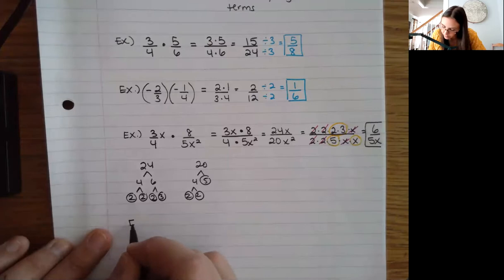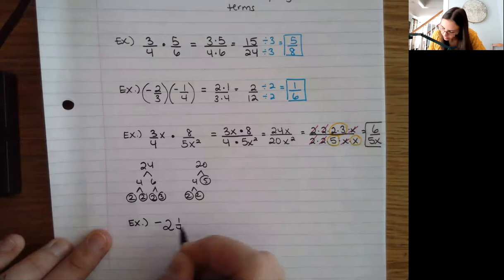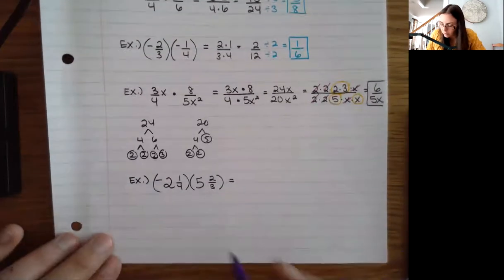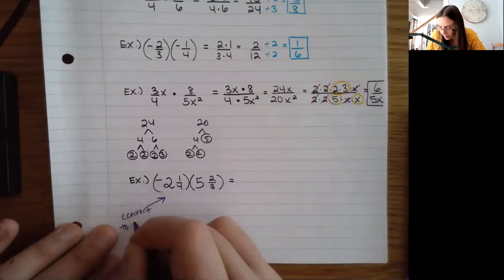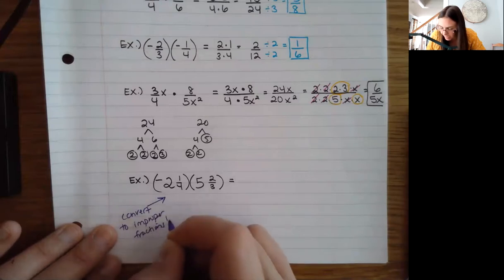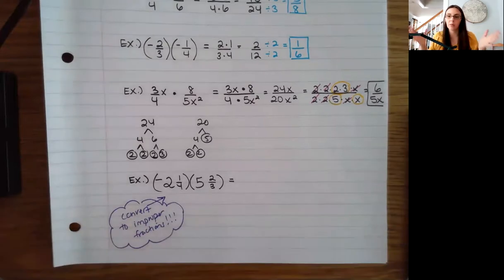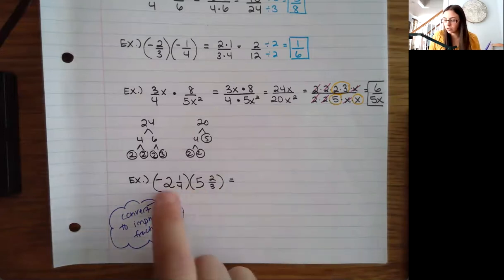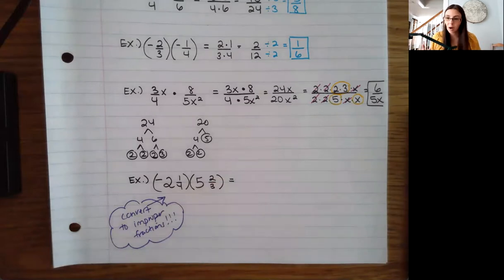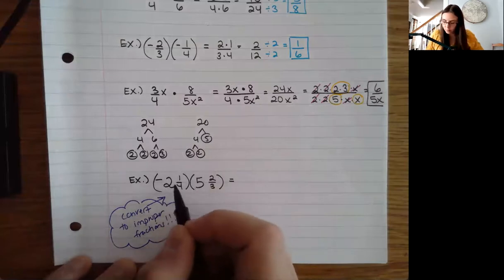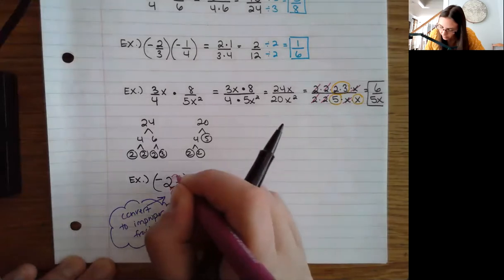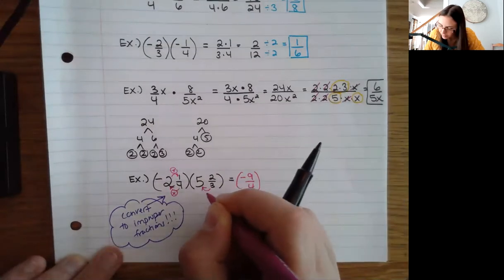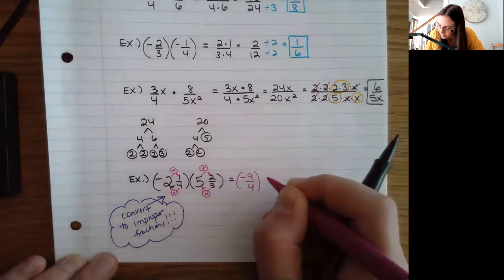Let's do an example with mixed numbers. Let's say I have negative 2 and 1/4 times 5 and 2/3. When you're multiplying, you want to convert to improper fractions — this is really important. It is not 2 times 5 and 1/4 times 2/3; that does not work. You have to convert to improper fractions. So: 2 times 4 plus 1 gives 9, making negative 9/4. Then 3 times 5 plus 2 is 17, so this becomes 17/3.